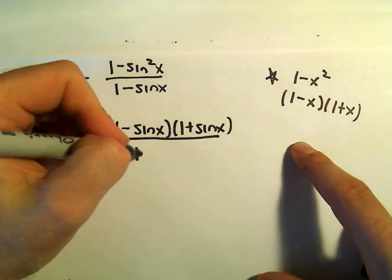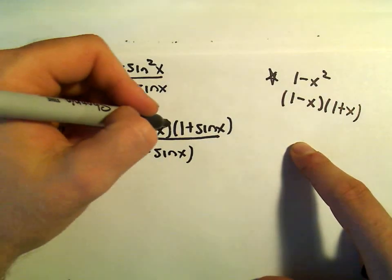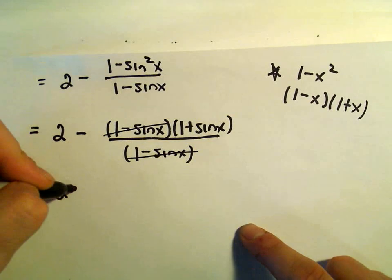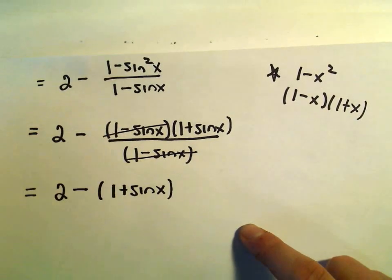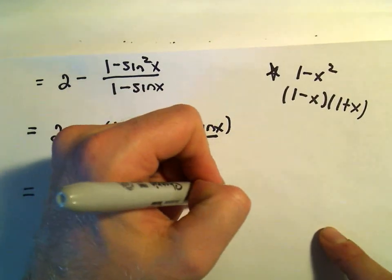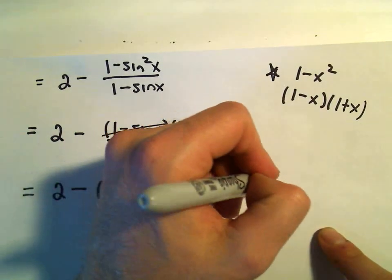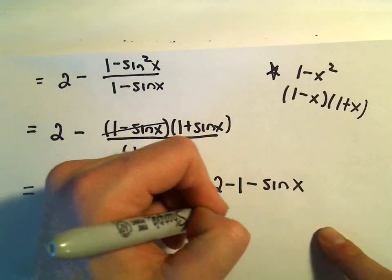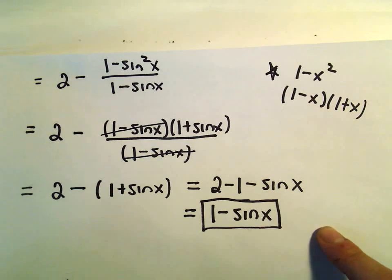But hey, we've got that 1 minus sine x just hanging out in the bottom. So really, we can cancel those factors out. And then we'll be left with 2 minus 1 plus sine x. But now I can simply distribute out this negative. I will get 2 minus 1. And again, if we distribute the negative minus sine x. Well, 2 minus 1 is 1. So we'll simply be left with 1 minus sine x.